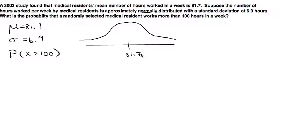So we're going to label the middle of the curve. We have 81.7 here and we're trying to find 100. Now because it says more than, we're going to shade the area to the right of 100 and this is what we're trying to find. Now this is for the normal just a random variable.